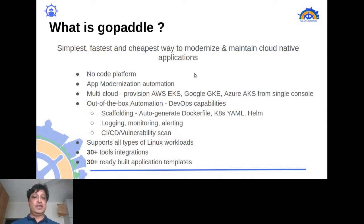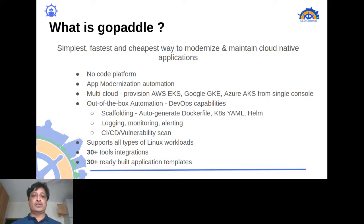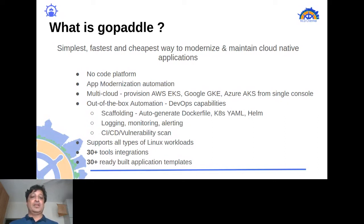GoPaddle is an out-of-the-box automation platform with all end-to-end DevOps capabilities. It does all the scaffolding — auto-generating all your Kubernetes artifacts including Dockerfiles, YAML files, and Helm charts — and handles logging, monitoring, alerting, CICD enablement, and vulnerability scans. It supports all types of Linux workloads.